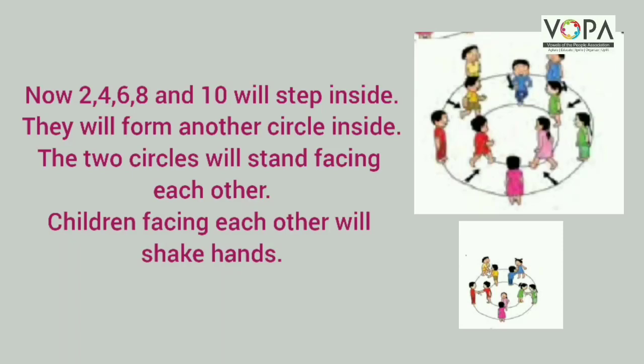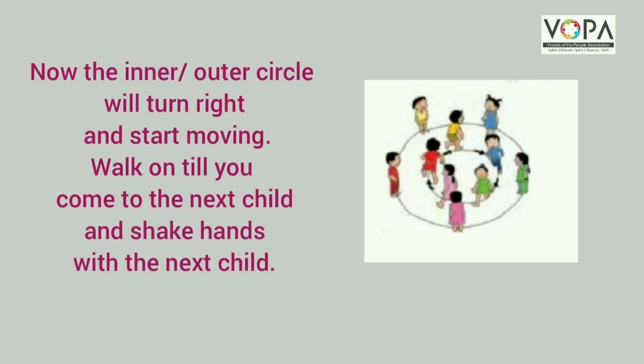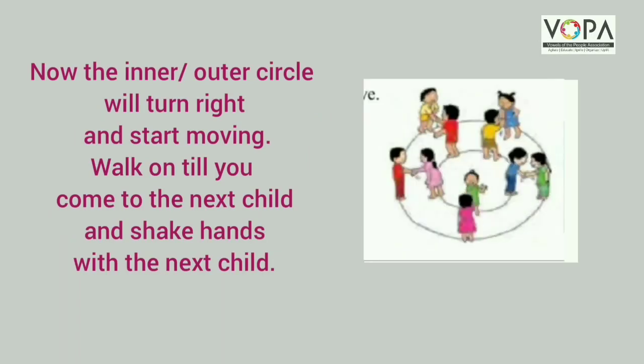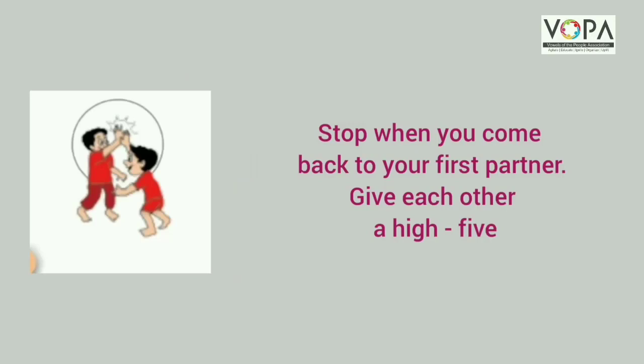The two circles will stand facing each other. Children facing each other will shake hands. Now the inner and outer circle will turn right and start moving. Walk until you come to the next child and shake hands with them. Stop when you come back to your first partner and give each other a high five.